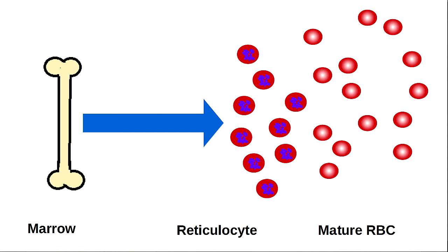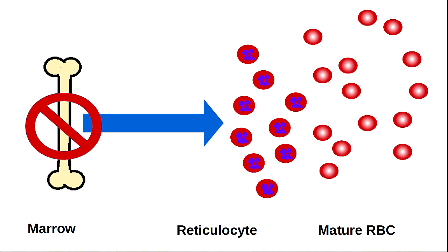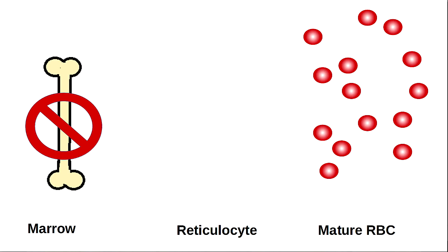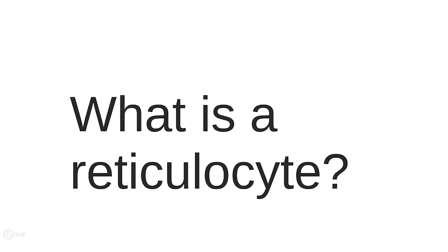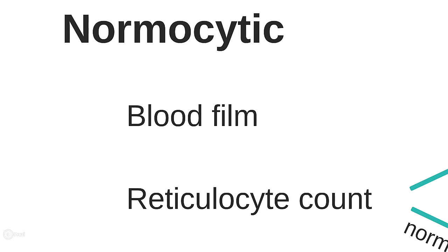Normally the marrow has a huge capacity for increasing red blood cell production and will do this to compensate for anemia, causing an increased number of reticulocytes. However, if the anemia is caused by a problem with the marrow, or if the patient has a deficiency of iron, B12, or folate, or if there is no erythropoietin, it won't be able to increase red cell production and the reticulocyte count will be normal or low. We can therefore use a reticulocyte count to decide whether anemia is caused by reduced production from the bone marrow or death of red blood cells — which is called hemolysis.